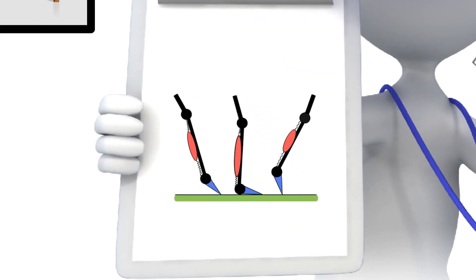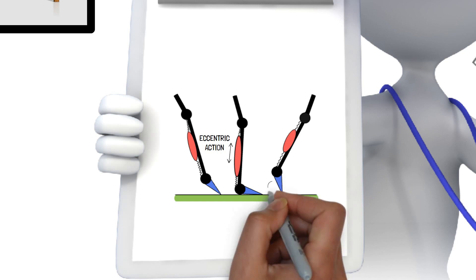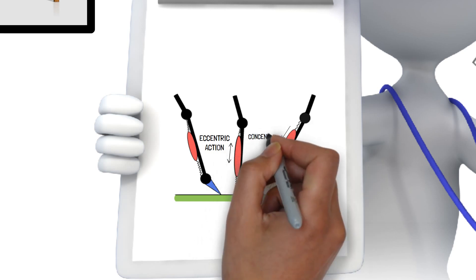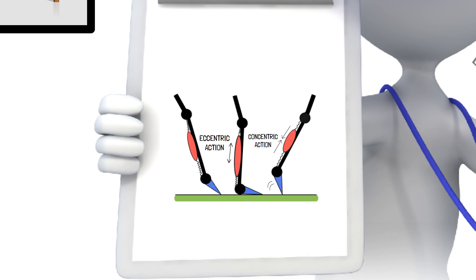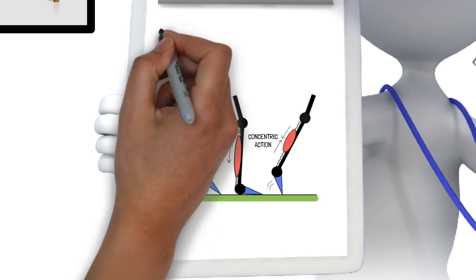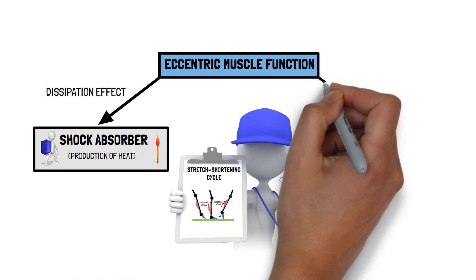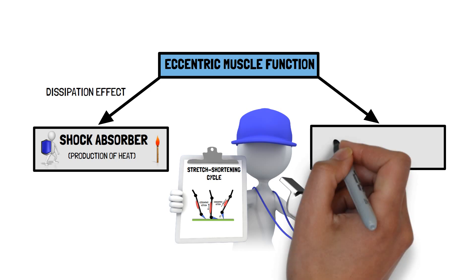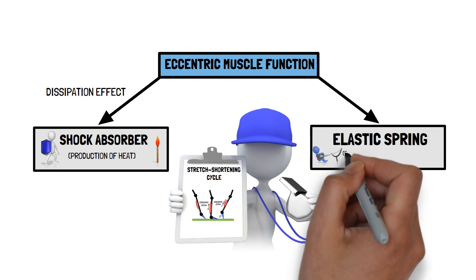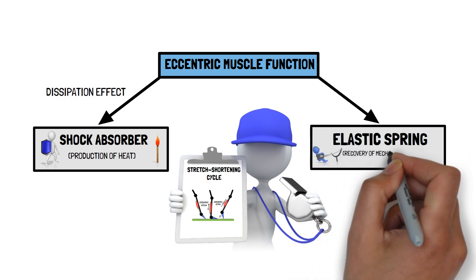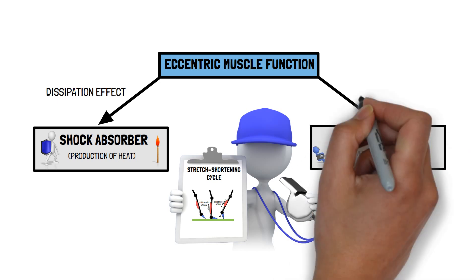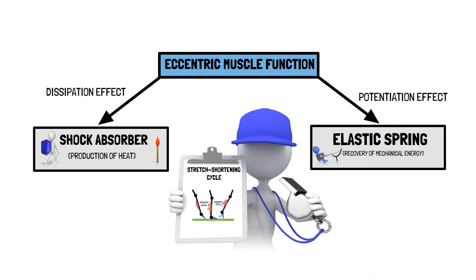The absorbed energy during the eccentric action can be temporarily stored as elastic energy and used during an immediate concentric action. This phenomenon, called the stretch-shortening cycle, allows the muscle to act like a spring, whereby the kinetic energy generated enables faster movements to be achieved.